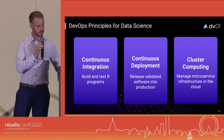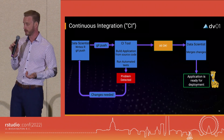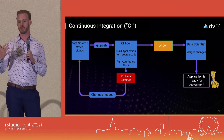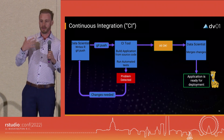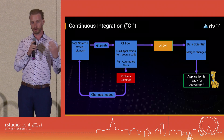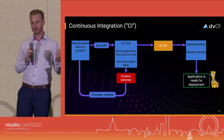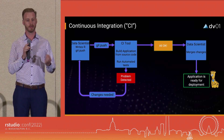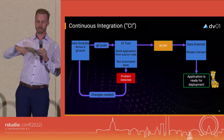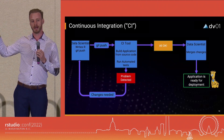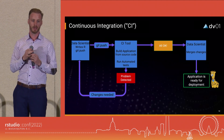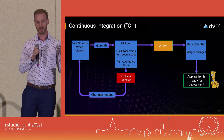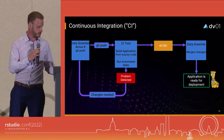This is a simple continuous integration workflow. We start where a data scientist is working in R Studio, making updates to the model and code. Whenever a data scientist makes an update to the code base, they push it to a version tracking tool such as GitHub. At that point, the application will be built from the source code, and then we run automated tests on that automatically. I'll get a report back — if the tests fail, I know I have to fix something. If they pass, I can merge my changes into the master branch and we have an application ready for deployment.